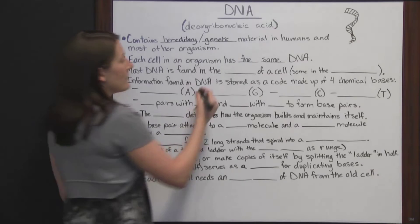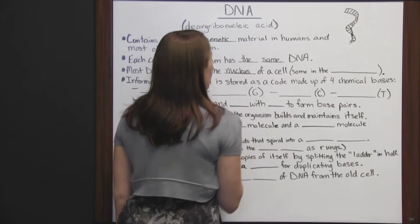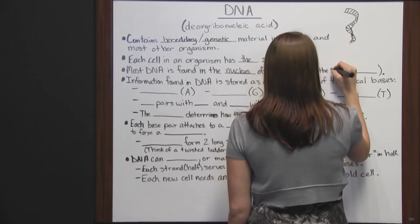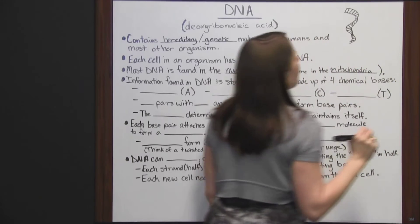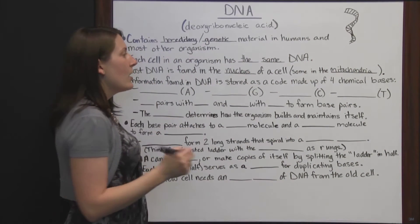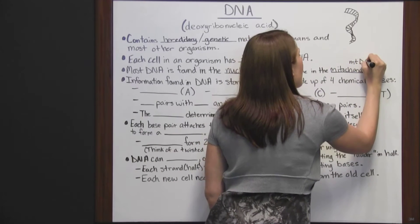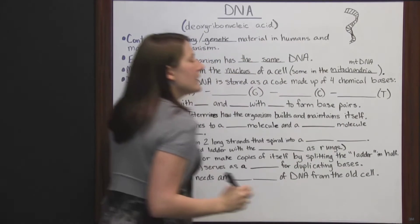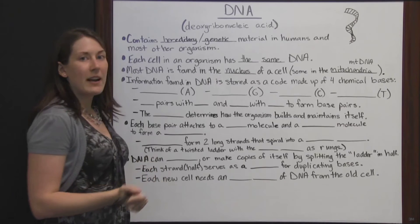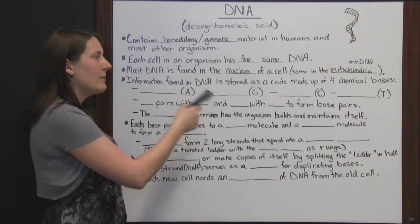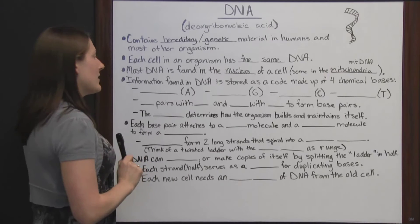Most DNA is found in the nucleus of a cell. There is some DNA in the mitochondria, known as mitochondrial DNA, abbreviated as mtDNA. If you see the little 'mt' before DNA in the abbreviation, that's because it's mitochondrial DNA found in the mitochondria instead of the nucleus, but most DNA is going to be in the nucleus.